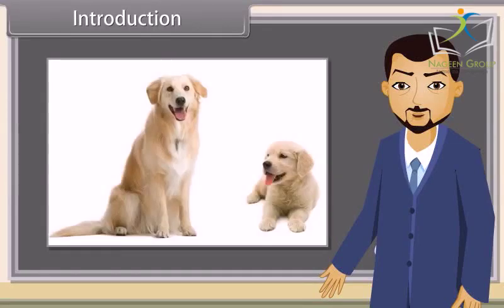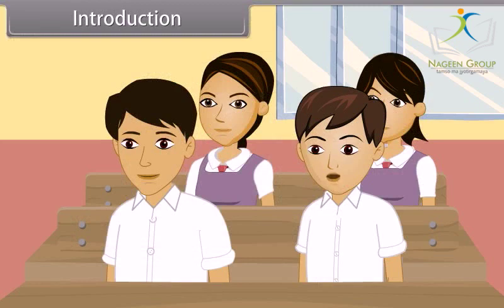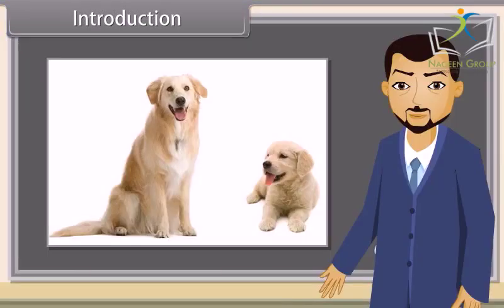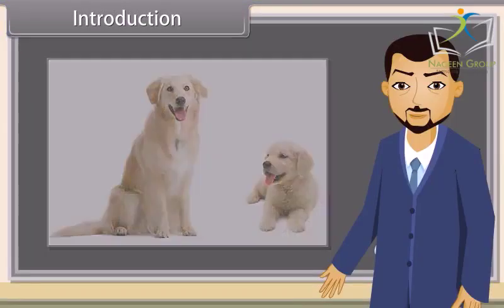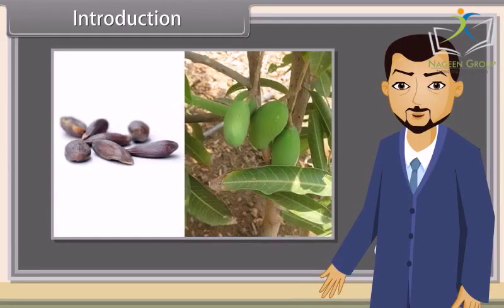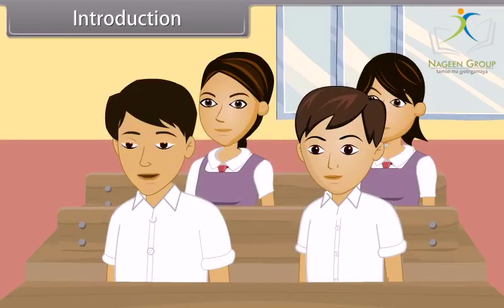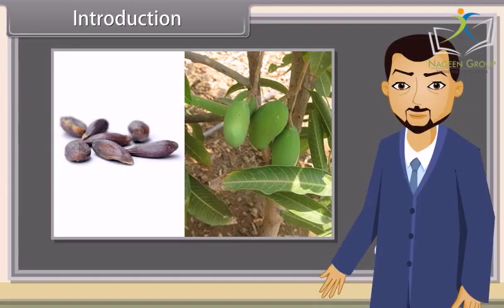What can you see in this picture? We can see a dog and its puppy. Correct. Can the seeds in this picture produce the corresponding mango plant? No. Mango plant can only be produced from a mango tree. You are right.